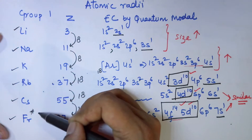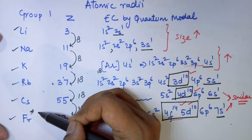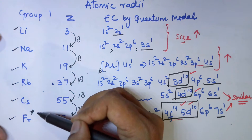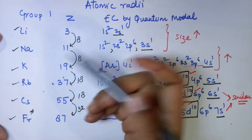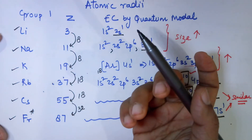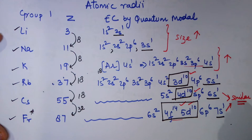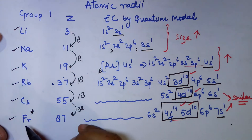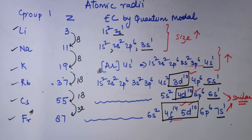There is a star next to francium, which means this element is radioactive. Radioactivity means the element's nuclei is unstable and it disintegrates. If the nuclei disintegrates, the number of protons would change, and if the number of protons is changing, the element loses its identity. So for chemical purposes, we don't study francium for any properties.